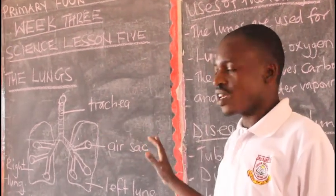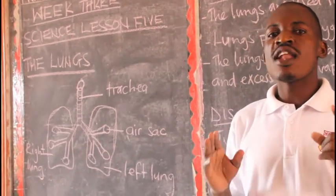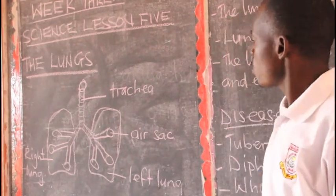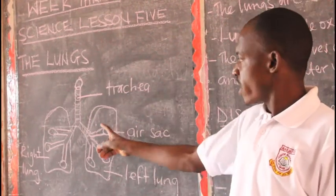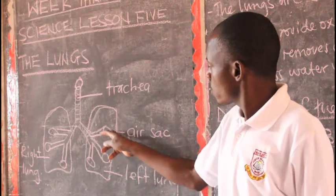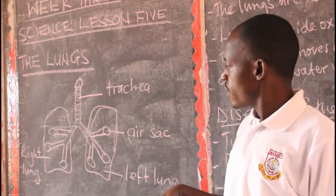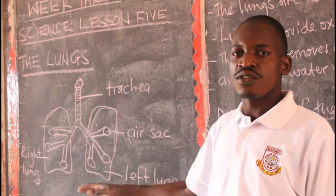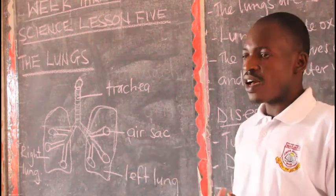The lungs look like this. The human being has a pair of lungs, meaning it has two lungs — the left lung and the right lung. When you look at our lung, we have this part here called the trachea, or trunk air. From the trachea, we have these branches here that end up in the air sacs. We also have what we call the bronchi, or branch air. We shall get the details of this in Primary 6; for us as Primary 4, we just look at the organ, which is the lung.